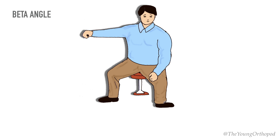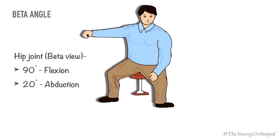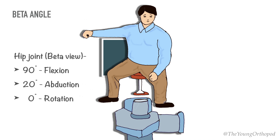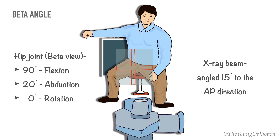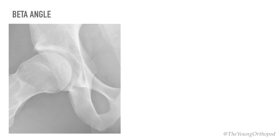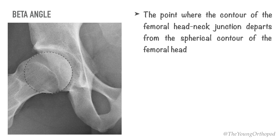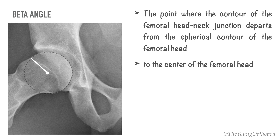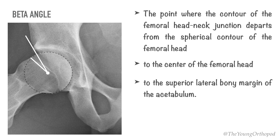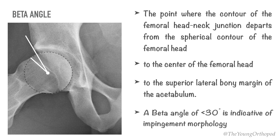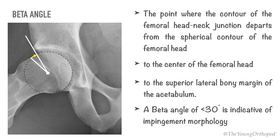The beta angle is measured on a beta view, where the hip is in 90 degrees of flexion, 20 degrees of abduction, and 0 degrees of rotation. The X-ray beam is angled 15 degrees to the anteroposterior direction so that it is tangential to the acetabular plane. The beta angle is measured from the point where the femoral head-neck junction departs from the spherical contour of the femoral head, to the center of the femoral head, and then to the superior lateral bony margin of the acetabulum. A beta angle of less than 30 degrees is indicative of impingement morphology, including cam, pincer, and mixed types.